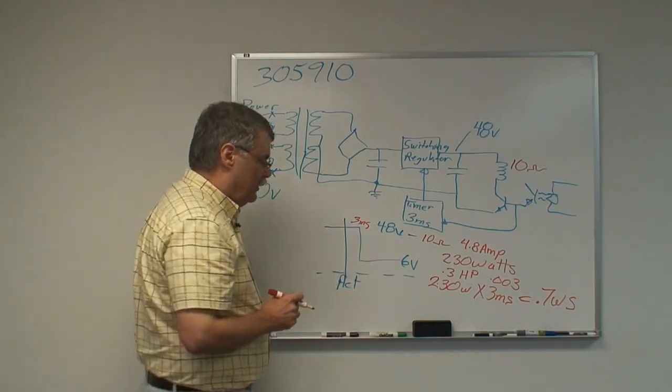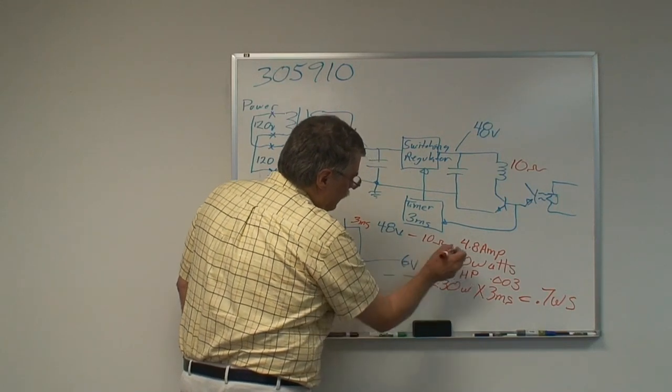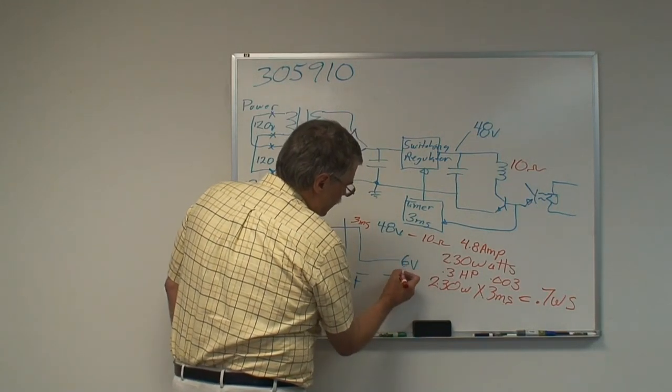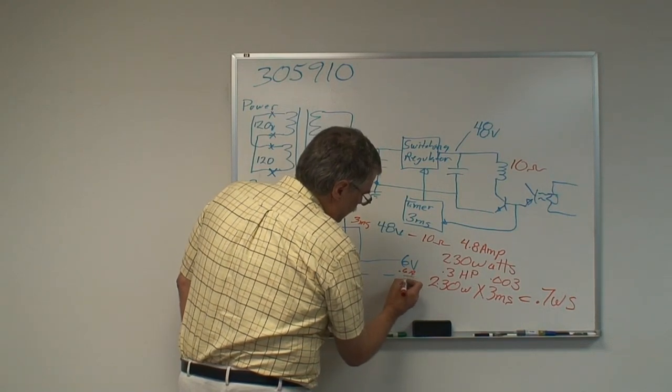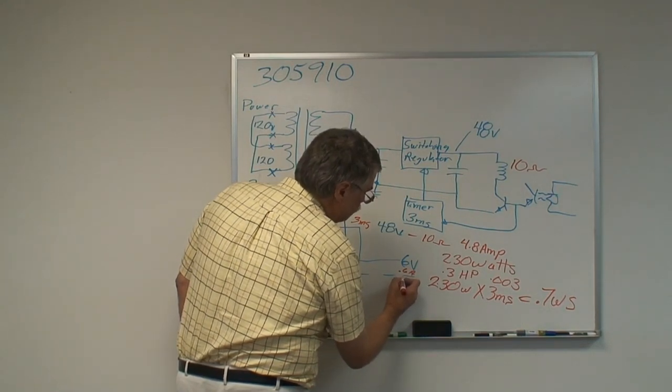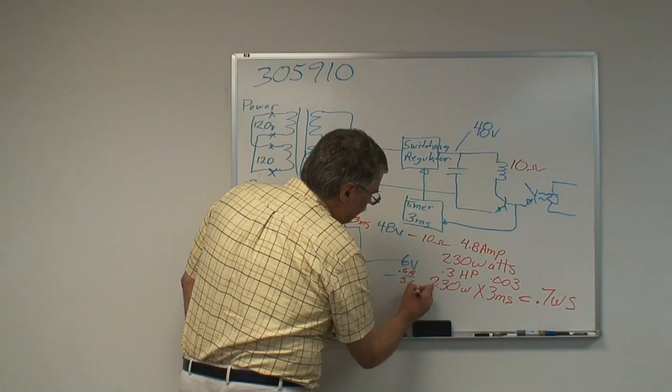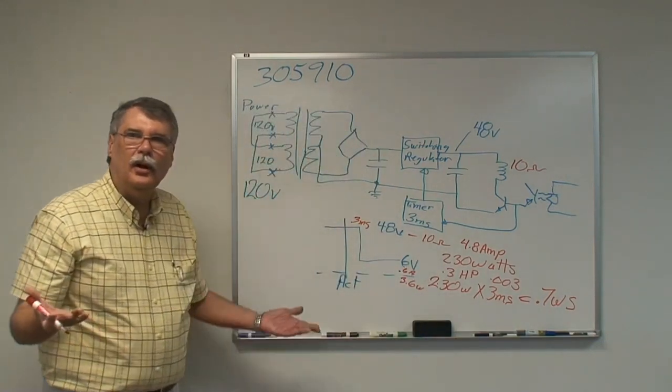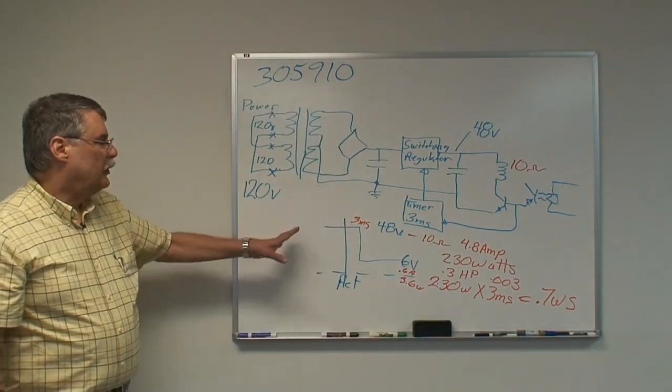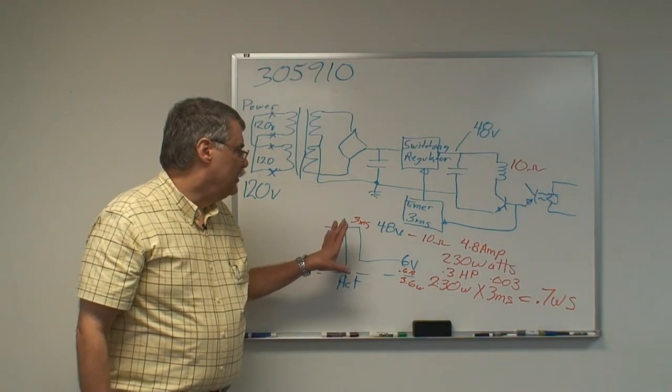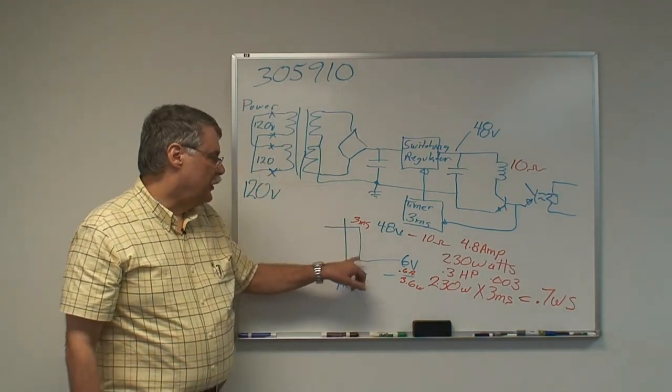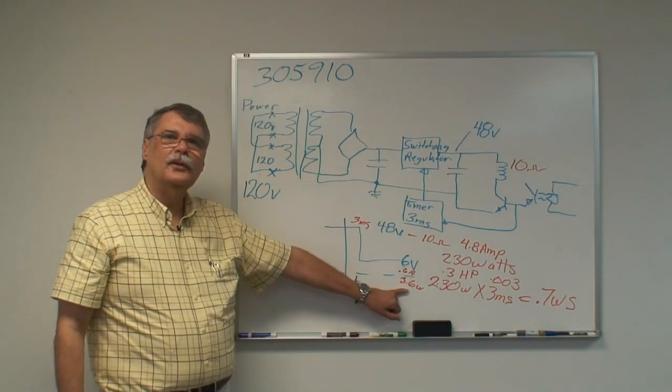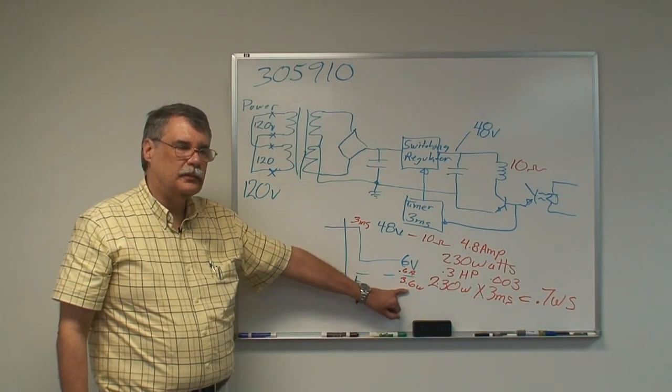When we're here at the 6 volt side, the 6 volts ends up being 0.6 amps, and it is 3.6 watts, which is also a relatively small amount of power. So we can get away with driving this thing incredibly hard for the 3 milliseconds, going back to the holding voltage, where the power level is greatly reduced.